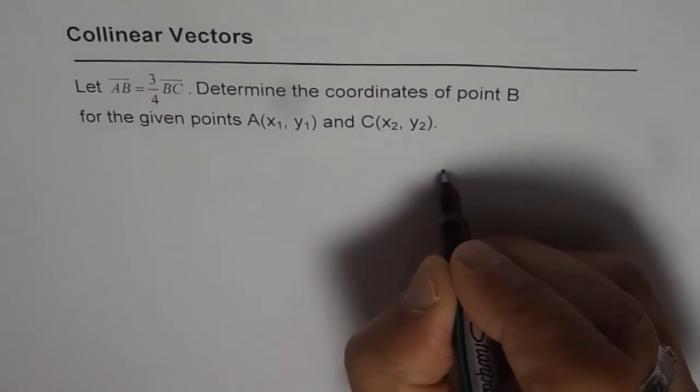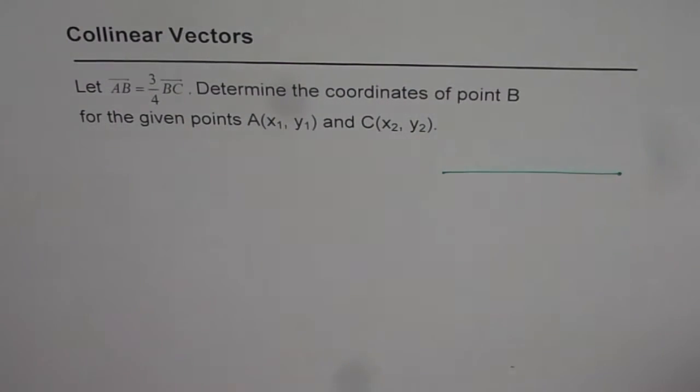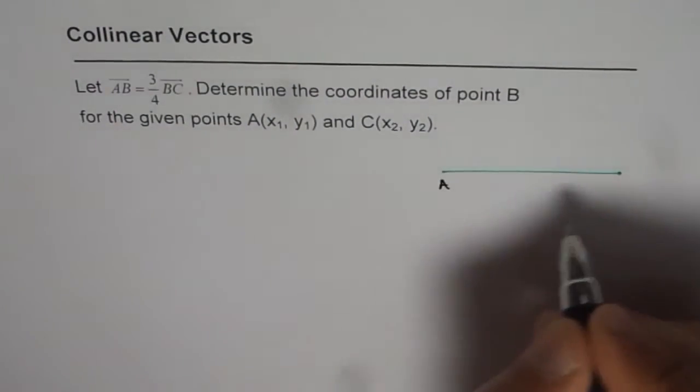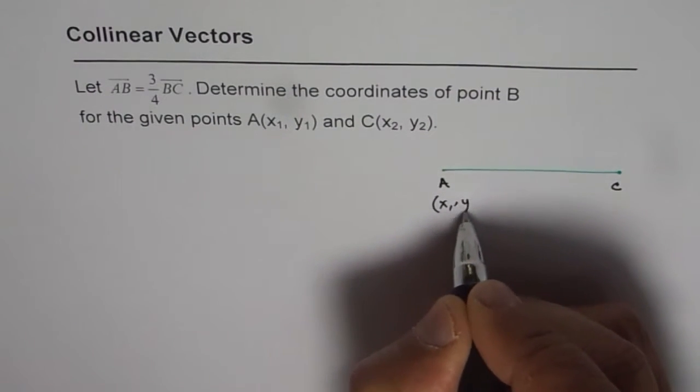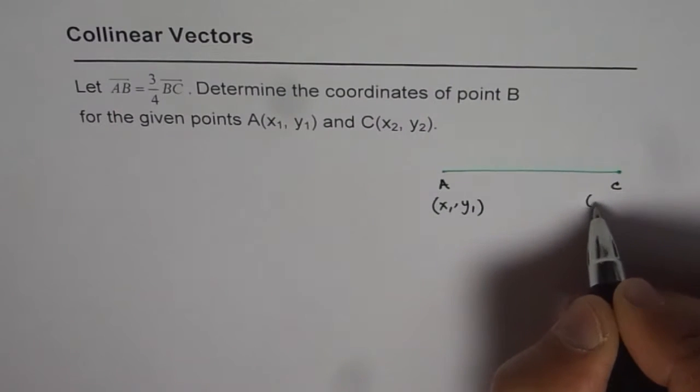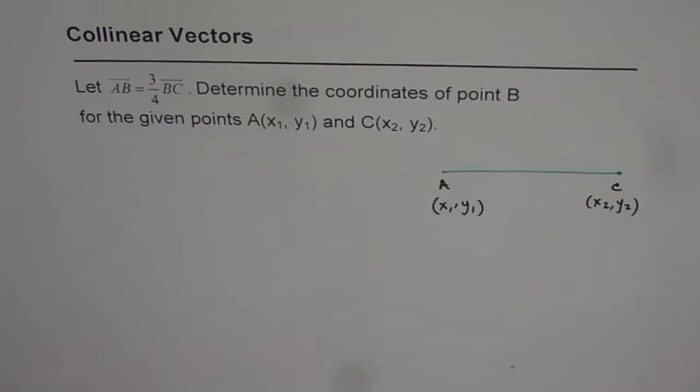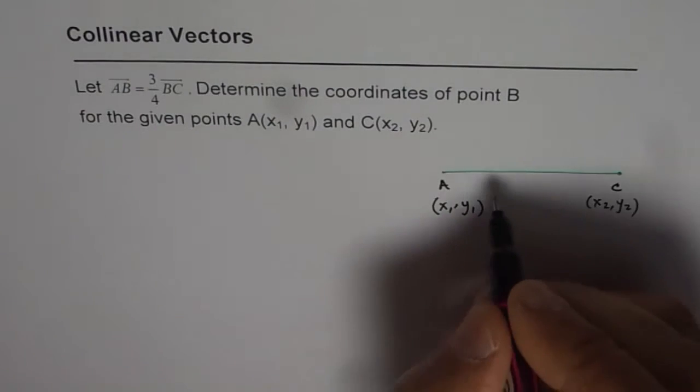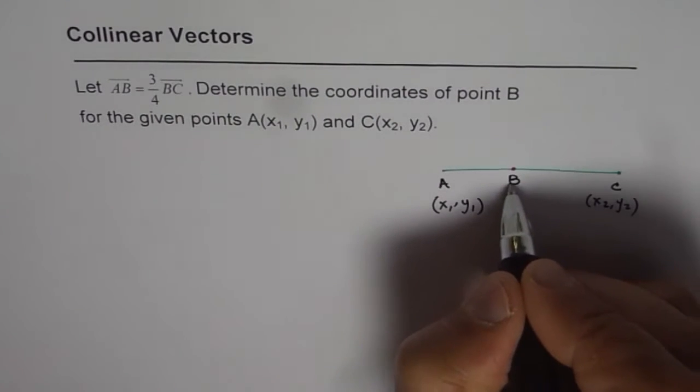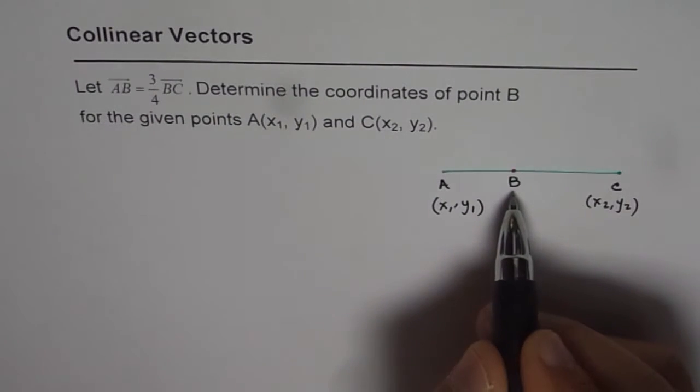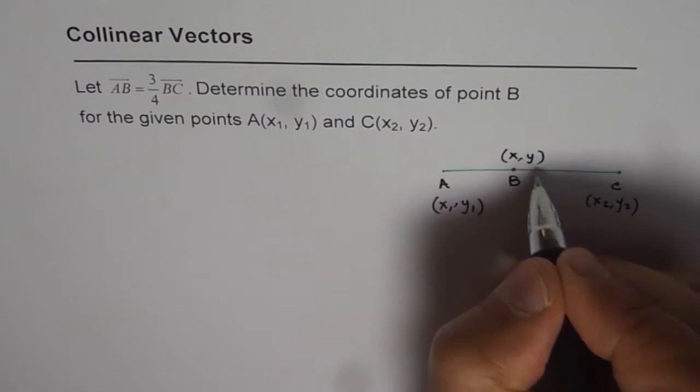We are given a line segment from A to C. Coordinates of A are x₁, y₁ and for C it is x₂, y₂. Somewhere in between we have point B. We need to find the coordinates of point B. Let the coordinates of point B be x, y.